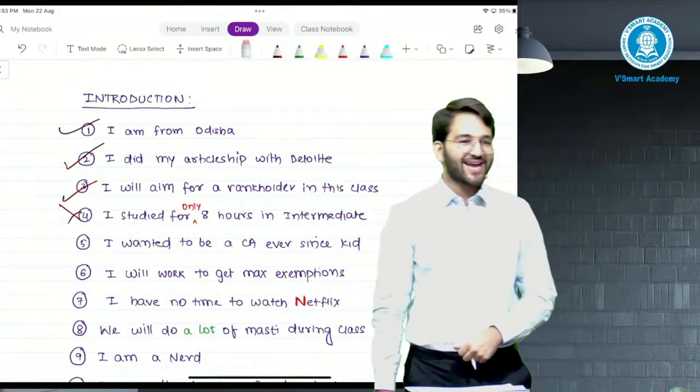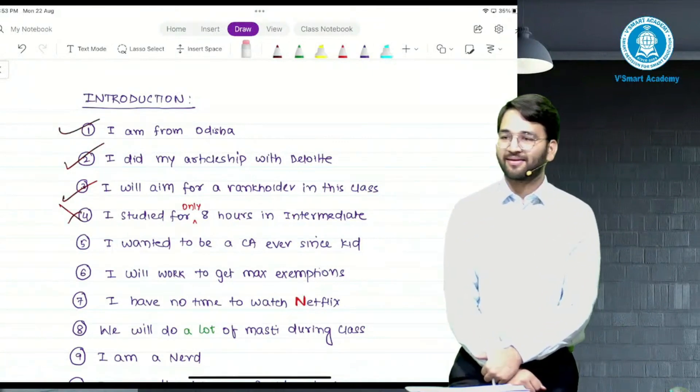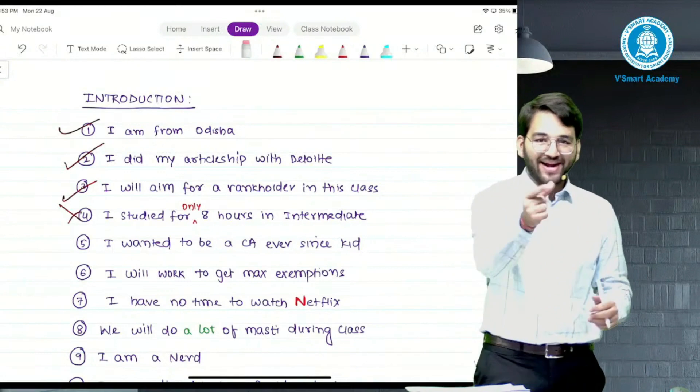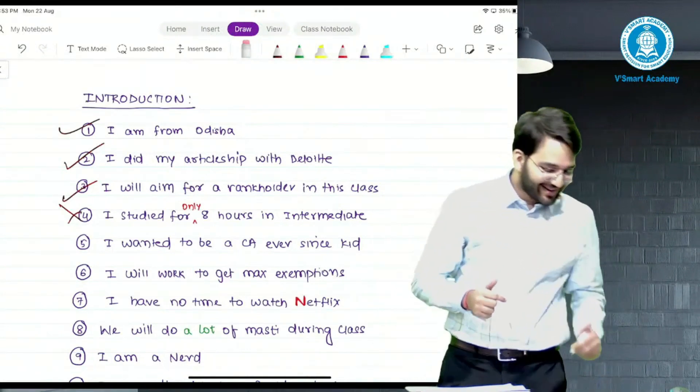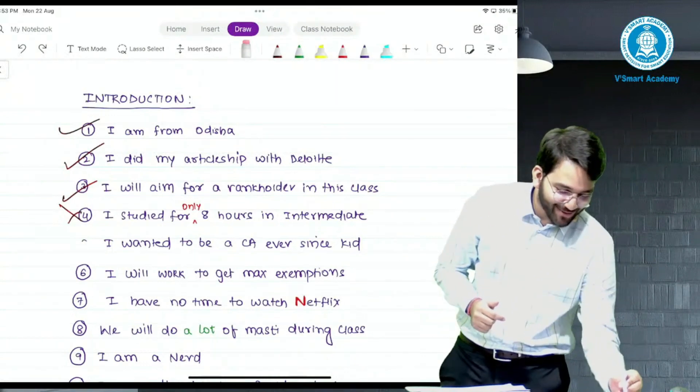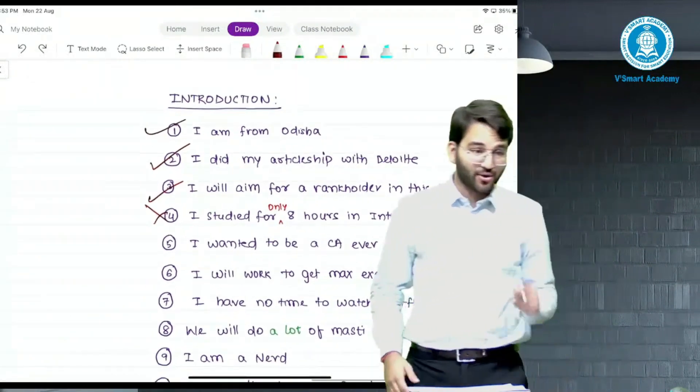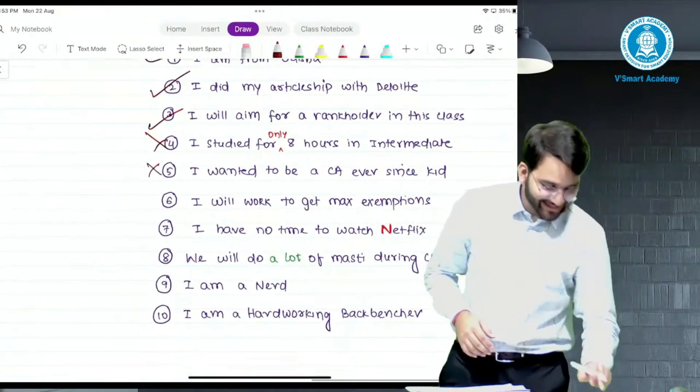Next, I wanted to be a CA ever since I was a kid. You're playing that mind game right now. So this is no, I never wanted to be a CA. I wanted to be a doctor. Actually, I never wanted to be a doctor - my mom and dad wanted me to be a doctor. So I have lost my dream.